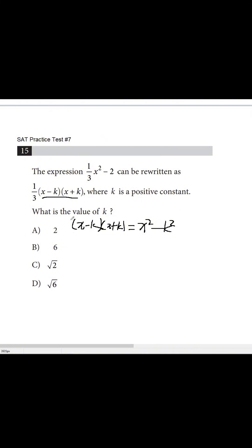Alright, now let's do this thing. 1/3 x squared minus 2 can be written as 1/3 x squared minus 1/3 k squared equals 1/3 x squared minus 2.